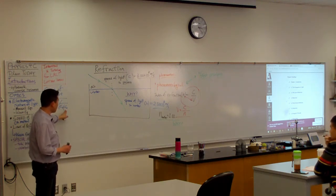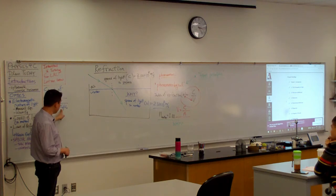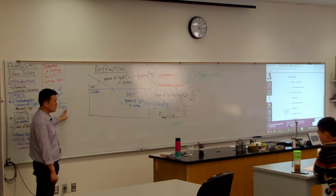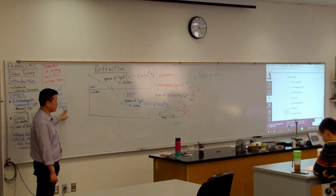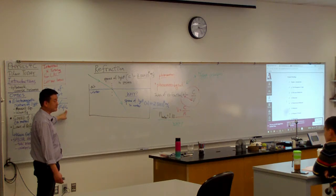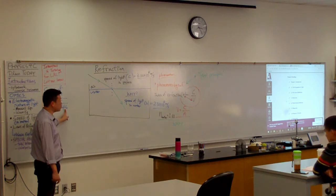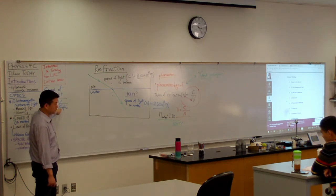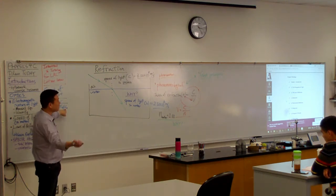When I say the names of these constants, I never say permittivity and permeability. I always say permittivity of free space, permeability of free space. Why? Why do I keep adding free space? Do I like free stuff that much? I mean, I do, but what does free space mean? Yeah, vacuum. These are constants that are specifically associated with vacuum. This is the electric constant for, this is the dielectric constant of vacuum. This is the magnetic constant of vacuum.